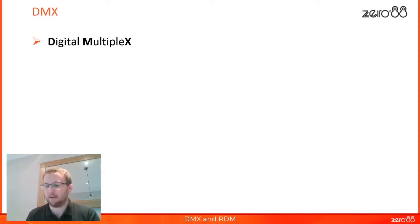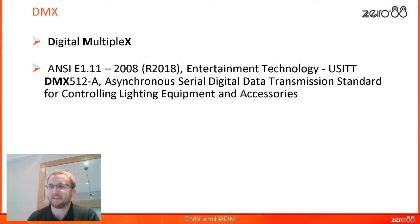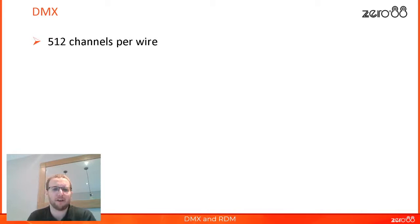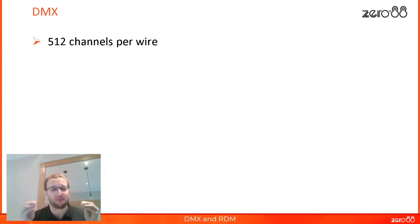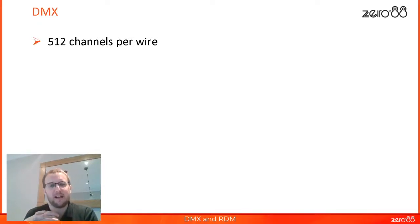DMX stands for Digital Multiplex — or actually, the full official name is ANSI E1.11 2008, revised in 2018. DMX supports 512 channels down a single cable. When it was developed back in the 1980s, that meant 512 dimmers or fixtures, which was way more than you could imagine in a lighting system. But nowadays we're using DMX for moving lights, LEDs, and media servers, using many more channels per fixture. So 512 is no longer that many, and we often need more — we call that another universe.